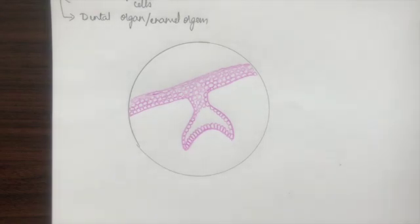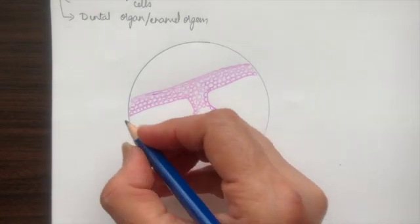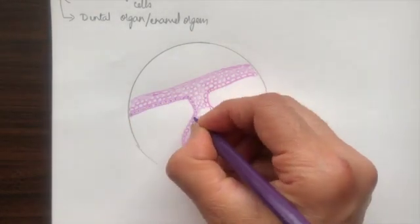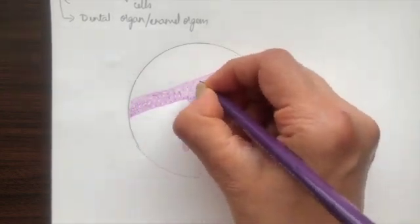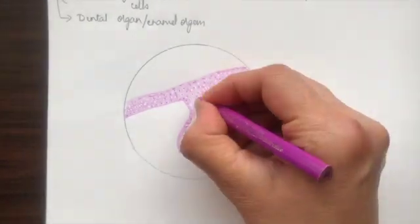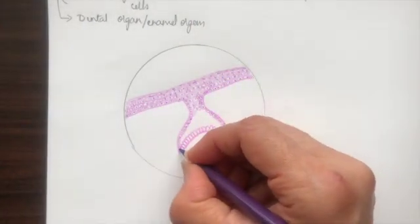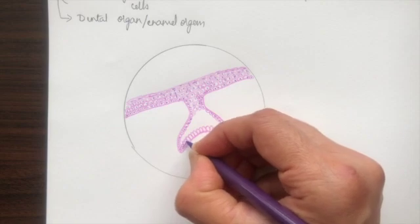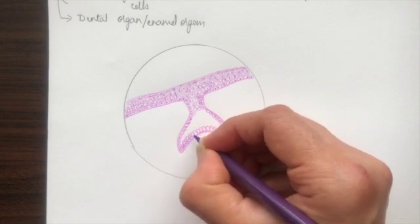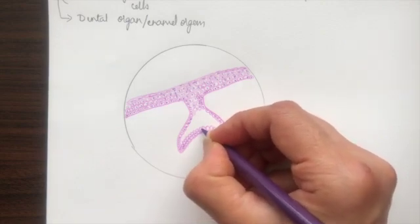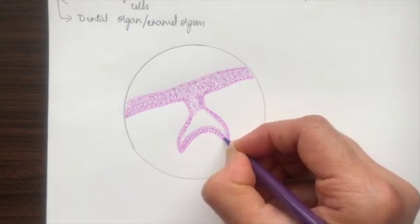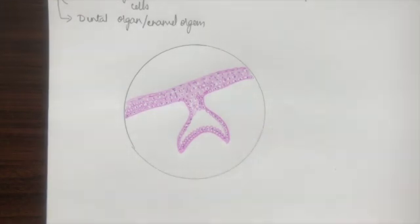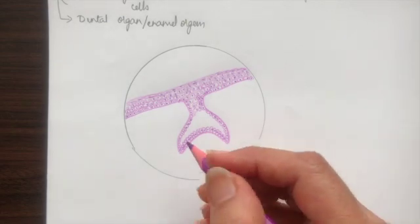Now we shall draw the nucleus for these cells. For the inner enamel epithelial cells, the nuclei are placed in the central region of these low columnar cells. This is an important point to remember because as the stage advances, the nuclear location changes.